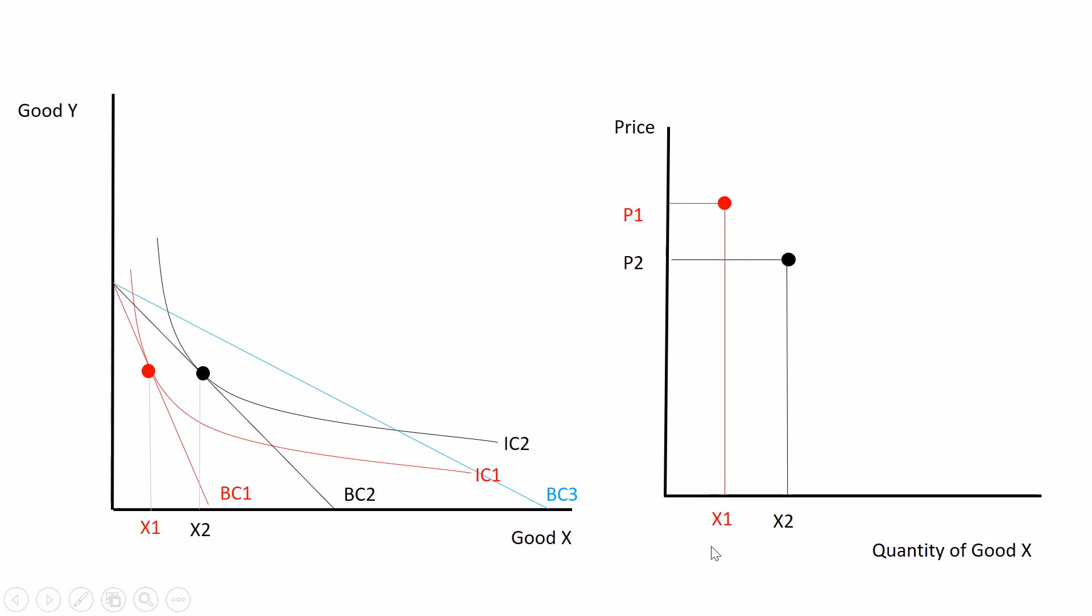And then just for illustration, let's lower the price of good x one more time. There's a third budget constraint for x. With this third budget constraint, I can reach a higher level of utility again. IC3 is higher up the mountain of utility than two or one, leading to this new bundle with a higher amount of good x in it. I can plot the new price, the lowest price so far, and the new x, the highest x so far, and I get this.